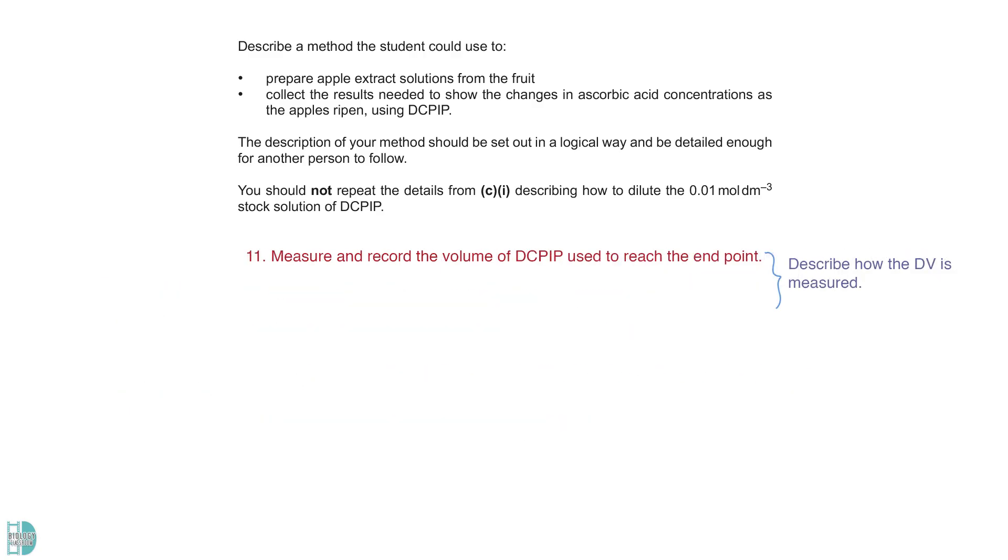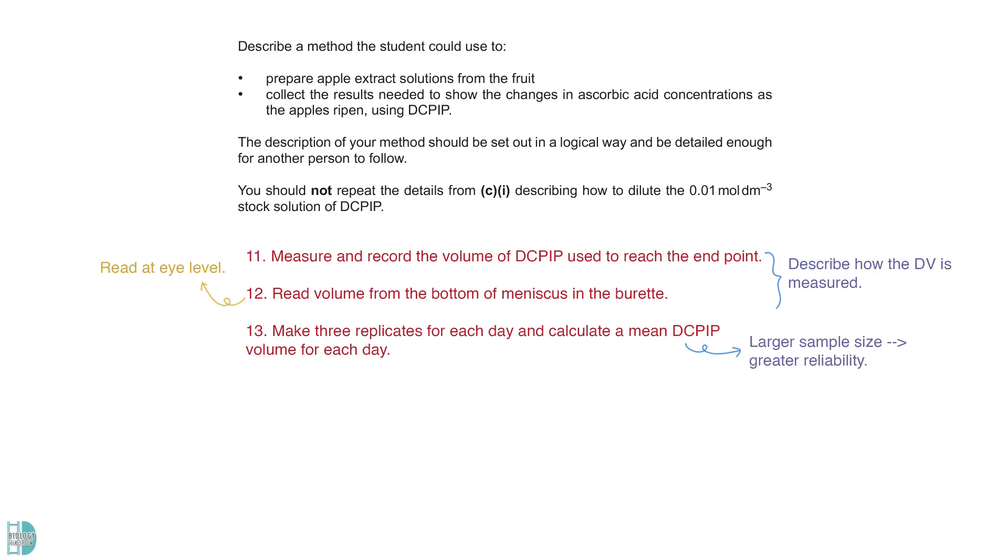Then, describe how the dependent variable is measured. We need to measure and record the volume of the DCPIP used to reach the endpoint. This is done by reading the volume from the bottom of the meniscus in the burette. You can add that it should be at eye level. For each number of days, make 3 replicates. Then, a mean DCPIP volume is calculated for each of them.